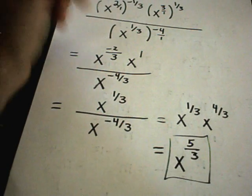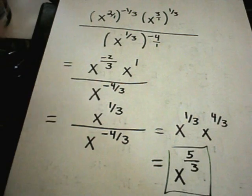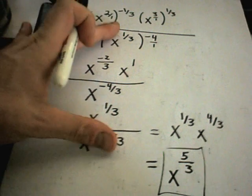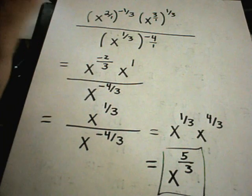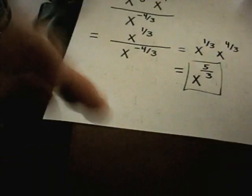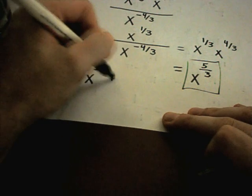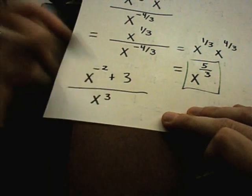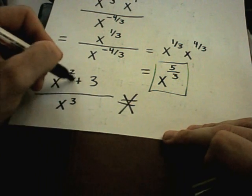Again, the only time you can move things around real easily is if there's all multiplication in top and all multiplication in the bottom. So, if you see a plus or a minus anywhere in the problem, be real careful about trying to change the sign on your exponent. An example of this where I've seen people go wrong, suppose it was x to the negative 2nd plus 3 over x to the 3rd.